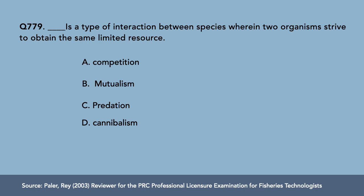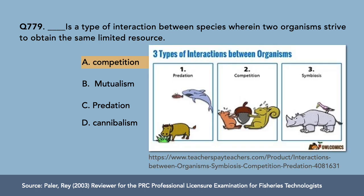Question 9: A type of interaction between species wherein two organisms strive to obtain the same limited resource — A) competition, B) mutualism, C) predation, D) cannibalism. The correct answer is letter A, competition. Competition can be either interspecific — occurring between different species — or intraspecific, where competition happens within the same species.